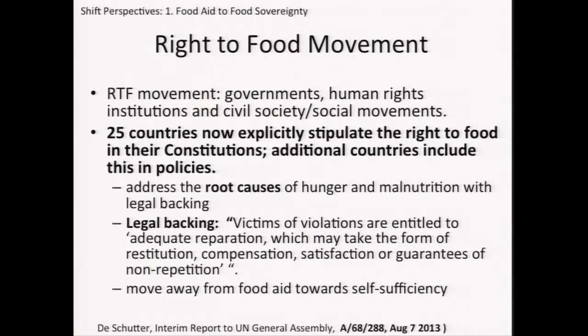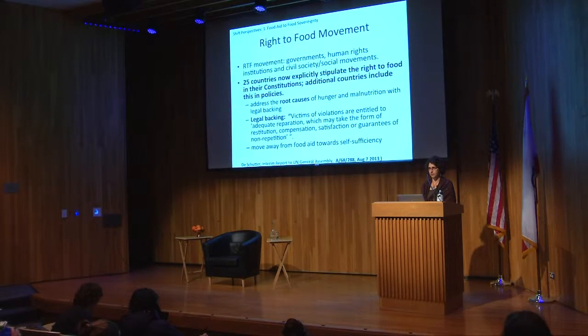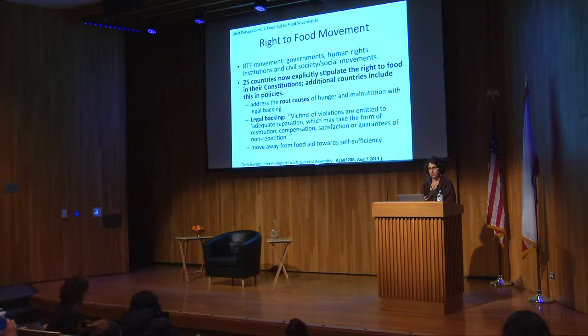In other words, and quoting from Olivier's work: 'Victims of violations are entitled to adequate reparation, which may take the form of restitution, compensation, satisfaction, or guarantees of non-repetition.' The idea is to really create a legal basis for people having not only the right to food, but also the right to produce the food that they need. So it's a move away from food aid towards self-sufficiency.